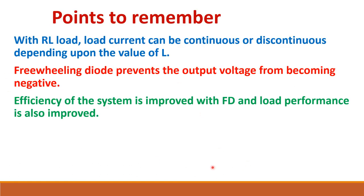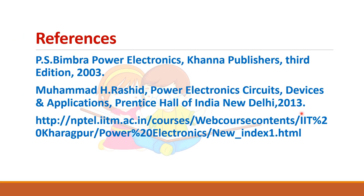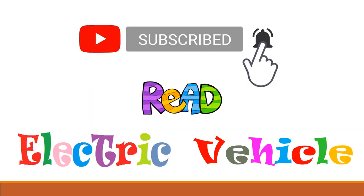To summarize: with RL load, the load current can be continuous or discontinuous depending on the value of L — beta can be small or large. Because of the freewheeling diode, output voltage will not become negative, preventing the average output voltage from dropping to a very low value. The efficiency of the system is improved with a freewheeling diode because the energy stored in inductance is dissipated in the load resistance, giving better load performance. Please subscribe to our Reed Electric Vehicle channel.